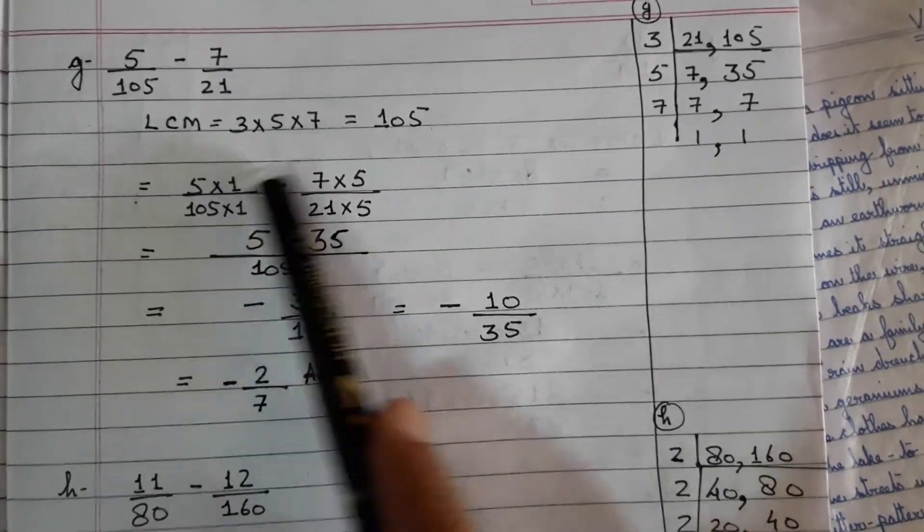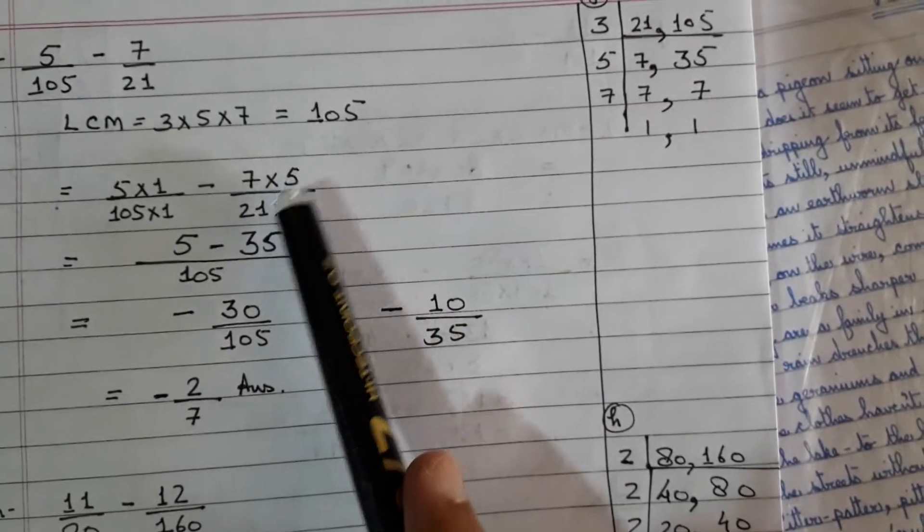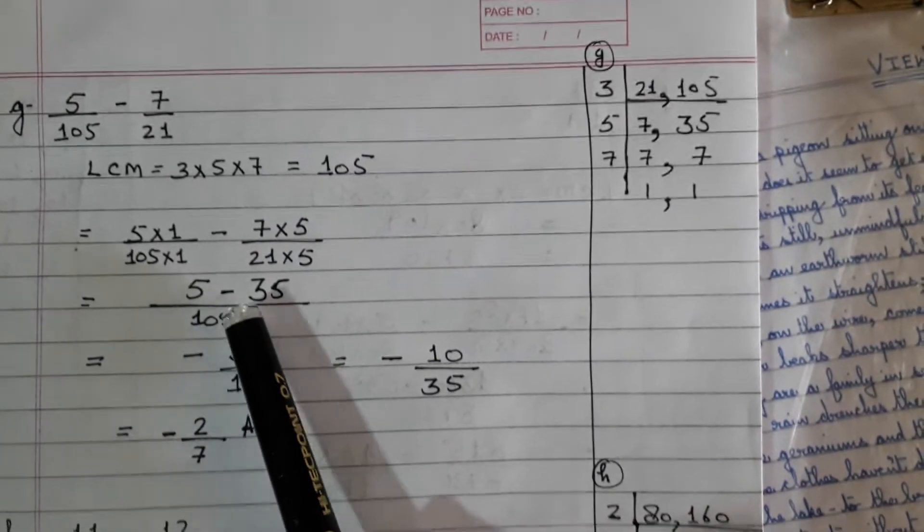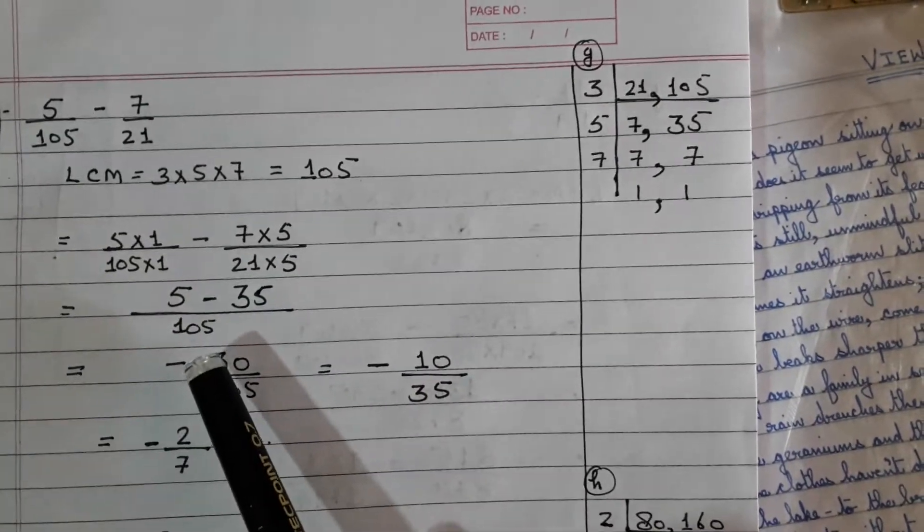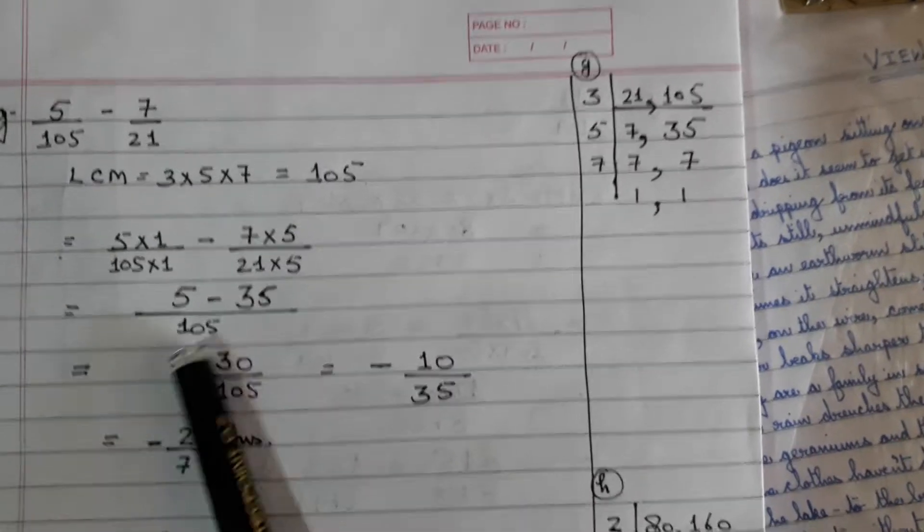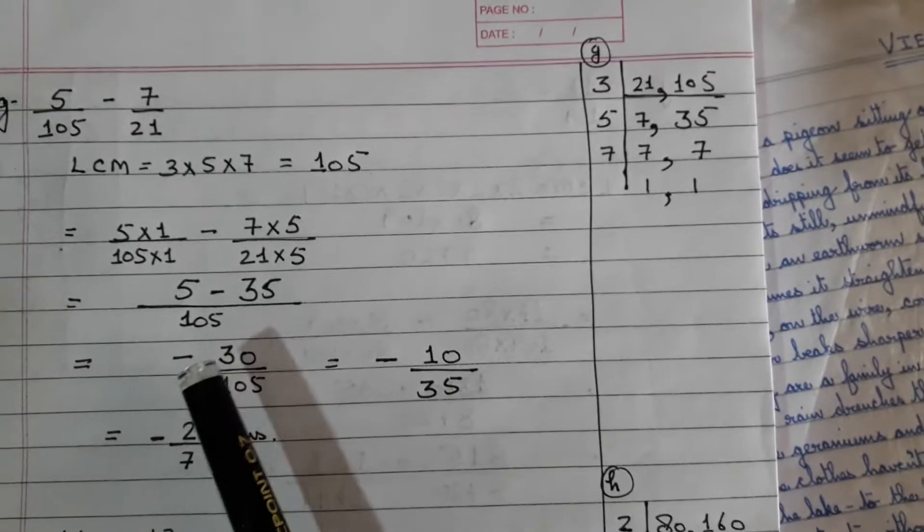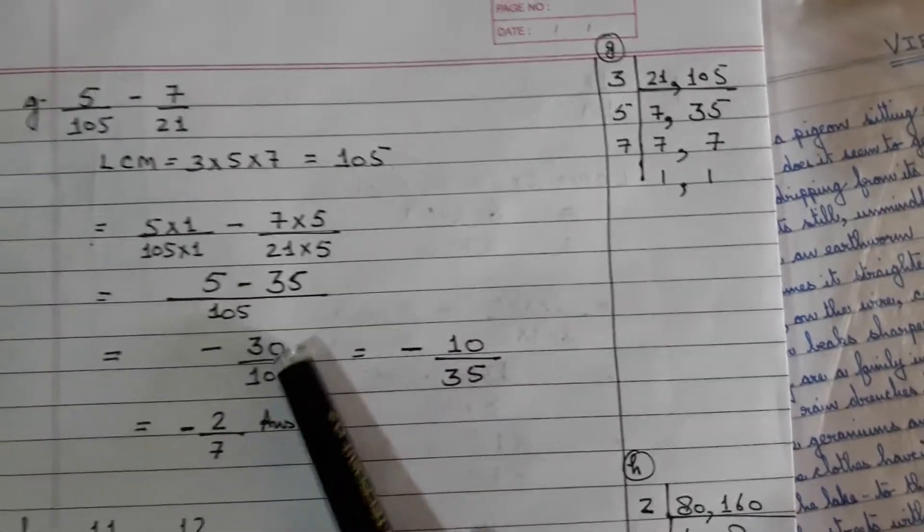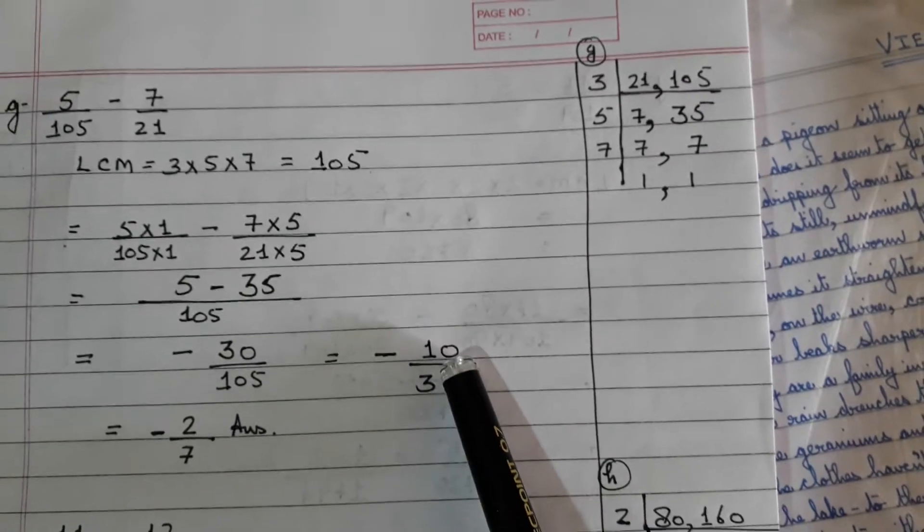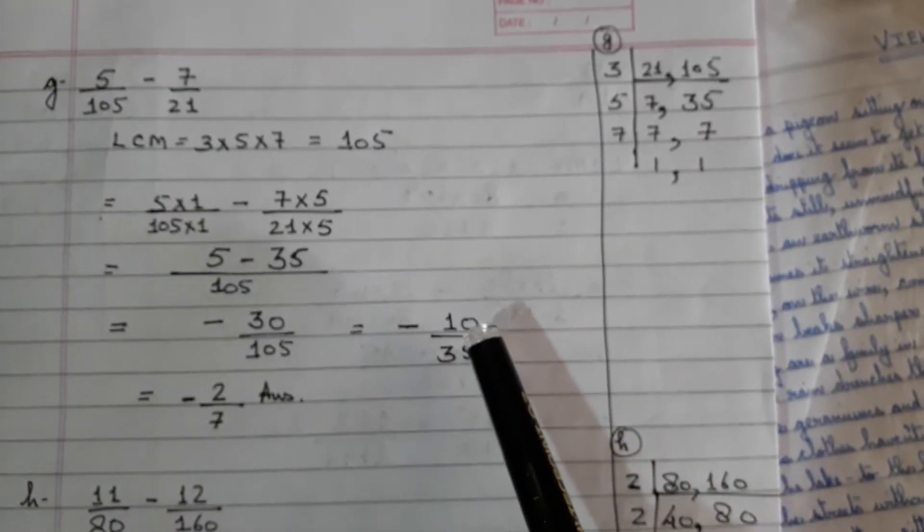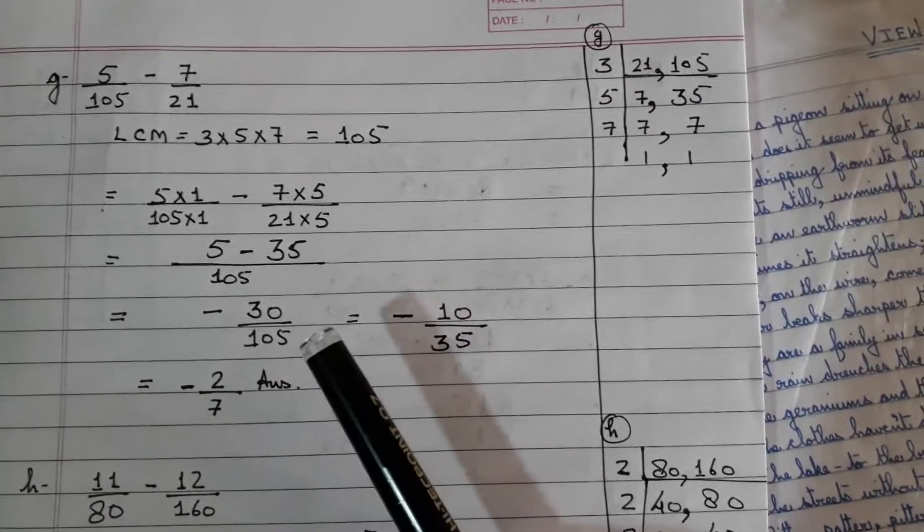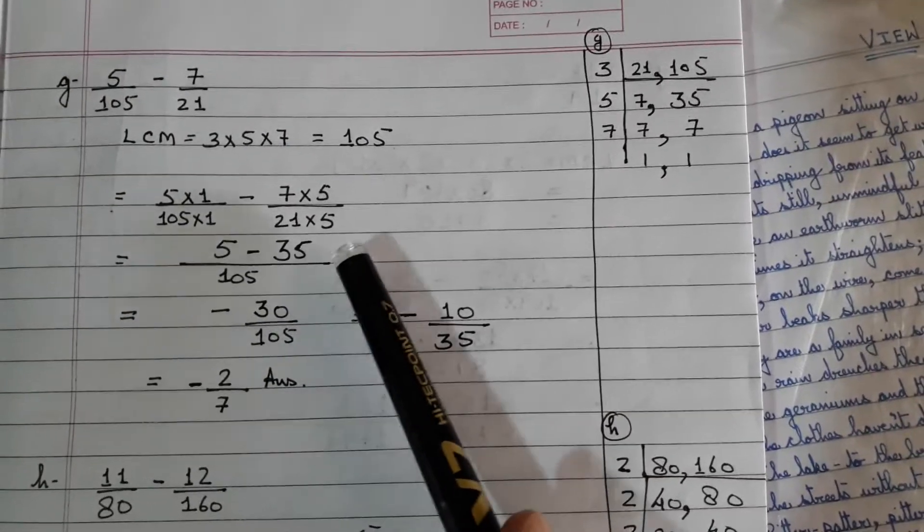This is something worth pondering over. 5 minus 35. This is very interesting. You are subtracting a bigger number from a smaller number. Method will be the same, but the sign will be of the bigger number. Your answer will come in minus. 35 minus 5 is 30, but the bigger number is minus 35, so the sign also will be of the bigger number. It will be minus 30 over 105. Can any common number divide both? 3 can divide. 3×10s are 30 and 3×35. So minus 10 over 35. Further, 5 can divide. 5×2 is 10 and 5×7s are 35. So my final answer is minus 2 by 7. I hope this is clear, how we get a minus number. This we have learnt in class so many times.